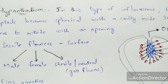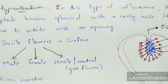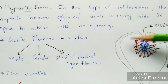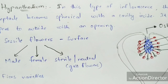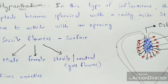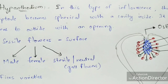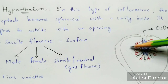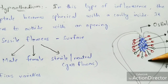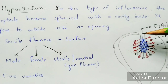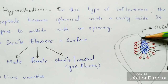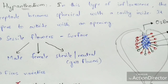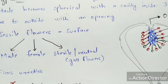In hypanthodium, the receptacle becomes spherical in shape. Within this spherical receptacle a cavity is present, and within this cavity these flowers are present. There will also be an opening present in this type of inflorescence, and that opening is called the ostiole.